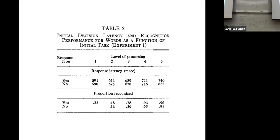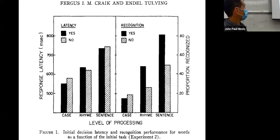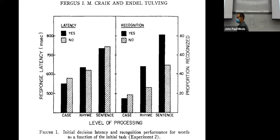Subjects study the words by answering questions and then are asked to recognize the words from old and new words. Everybody gets the same words — this is not an issue of exposures. The number of exposures is equal across all subjects. What matters here is how you process the word. This is called a levels of processing effect. In one study, they even demonstrated you can show these basic effects even when you don't expect a test at all.